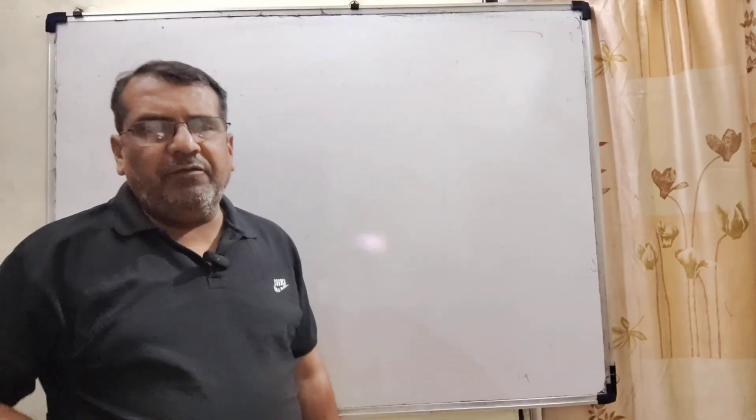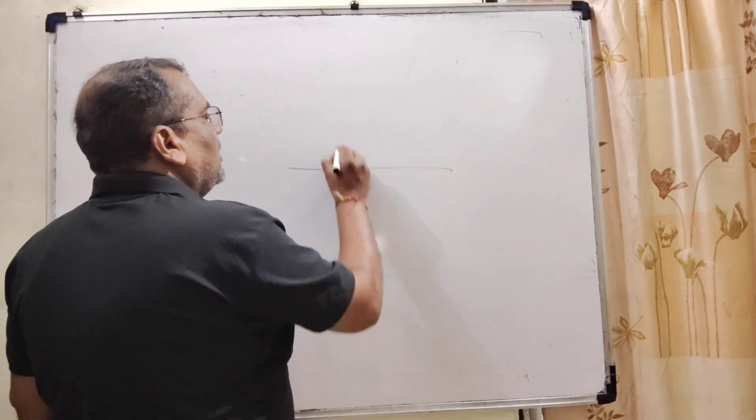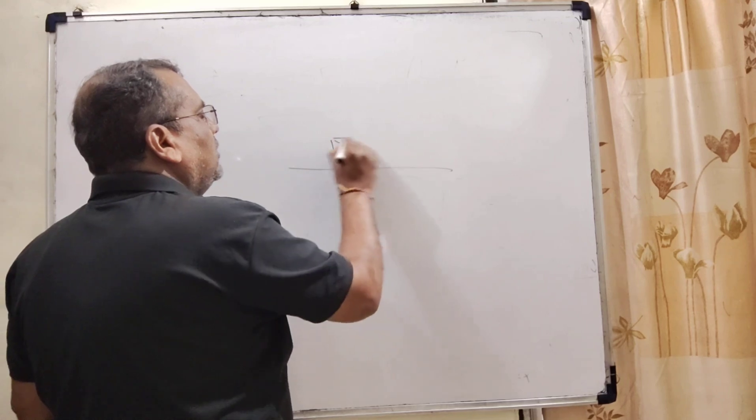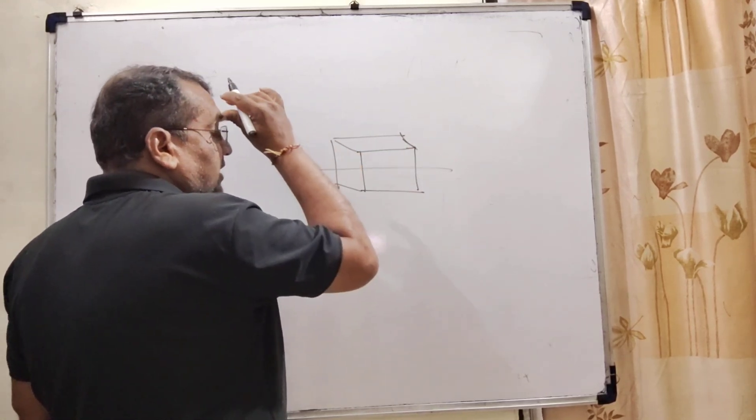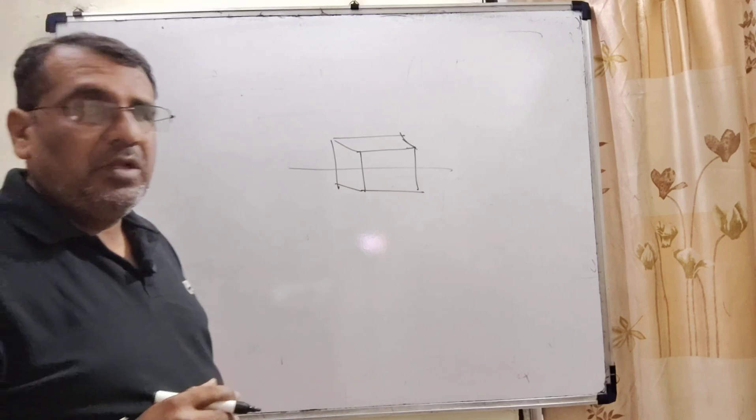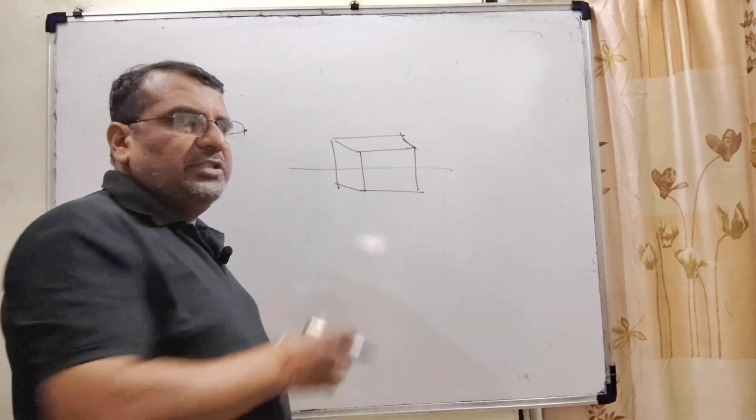This question is from waves and oscillations. Here, given in the question, a cubic block floats on water with each side being 10 centimeters. When we depress this block, it begins to oscillate.